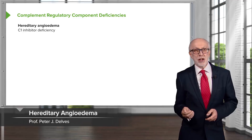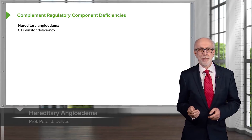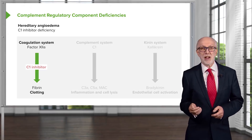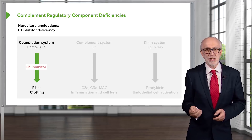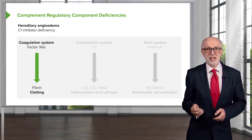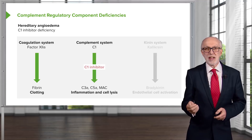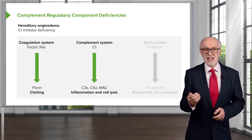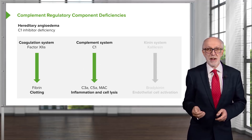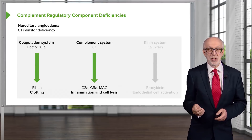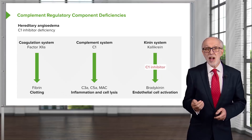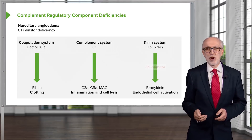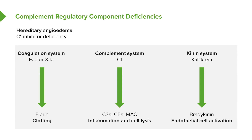Hereditary angioedema is due to a C1 inhibitor deficiency. C1 inhibitor is required to regulate the uncontrolled activation of the coagulation system, so in its absence there is excessive clotting. It's also required to regulate the complement system, and in its absence there is excessive production of activated complement components, resulting in inflammation and cell lysis. It is also involved in regulating the kinin system, so there is excessive production of bradykinin and endothelial cell activation as a result.